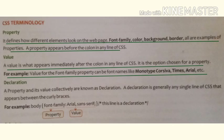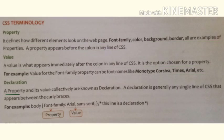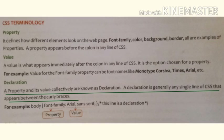Next is declaration. A property and its value collectively are known as a declaration. A declaration is generally any single line of CSS that appears between the curly braces.